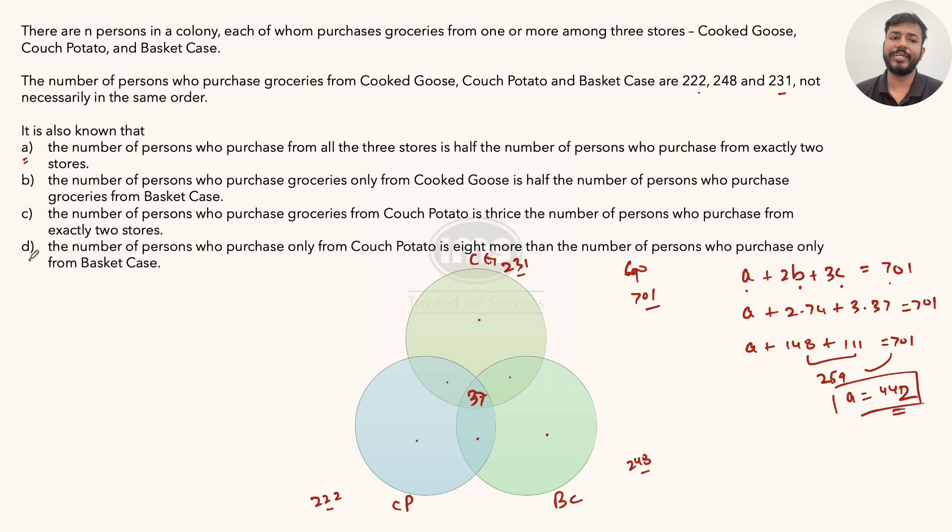Now we have one more condition, the D part. The number of persons who purchase only from Couch Potato is 8 more than the number of persons who purchase only from Basket Case. If I represent this as x, then this would be x plus 8. Can I get any more value from all what we have done?